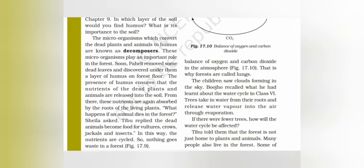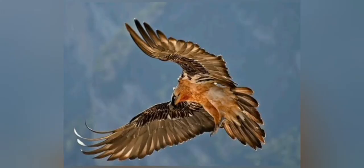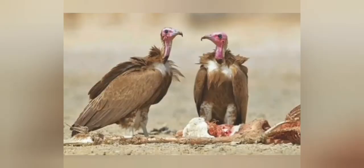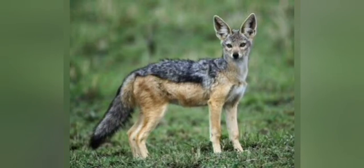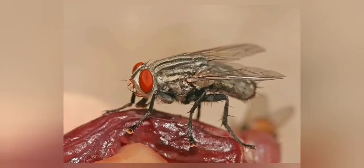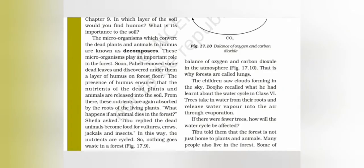What happens if an animal dies in the forest? The dead animals become food for vultures, crows, jackals, and insects. In this way, the nutrients are cycled and nothing goes waste in a forest. Dead and decaying matter becomes humus, dead animals become food for other animals, and ultimately all these things are recycled.